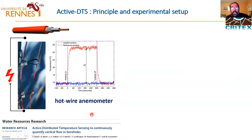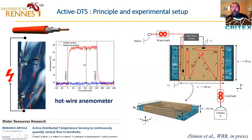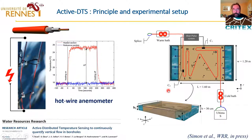We use it, for instance, in boreholes, but there are other applications. Here, what I want to present is some results where we use it in a sandbox experiment to see how, and with which accuracy, we can measure flow through the sandbox. Here is the cable inside the sandbox, and here we have a heat pulse system that controls the injection current along the fiber optic cable.